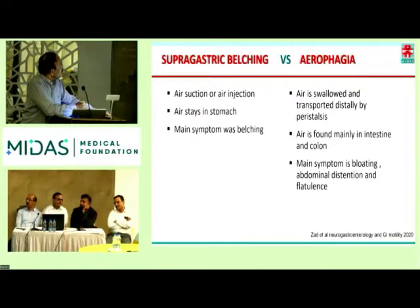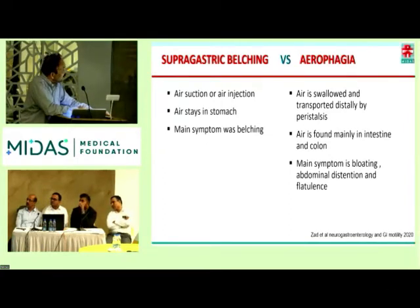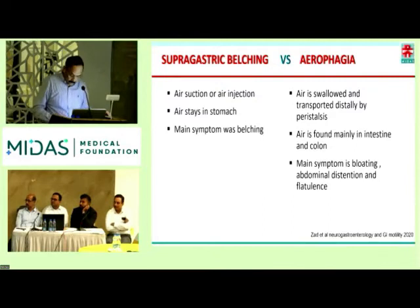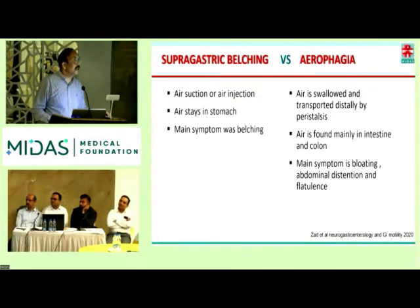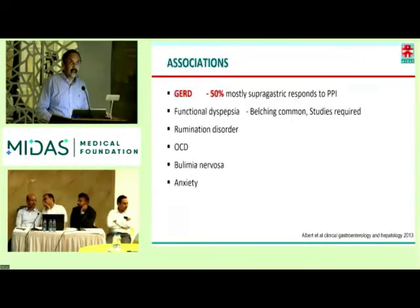What is the difference between supragastric belching and aerophagia? In supragastric belching, there is air suction, air stays in the stomach for a while but goes out — the main symptom is belching. In aerophagia, air is swallowed, transported distally by peristalsis into the intestine and colon, leading to bloating, distension, and flatulence. So in aerophagia, the main symptoms are bloating, distension, and flatulence.